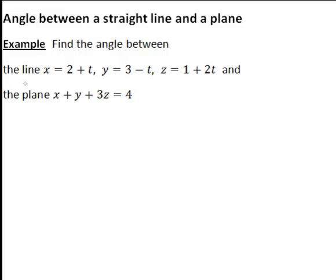We're given a line x equals 2 plus t, y equals 3 minus t, z equals 1 plus 2t. So we're given the scalar parametric equations of that line, and the plane x plus y plus 3z equals 4.